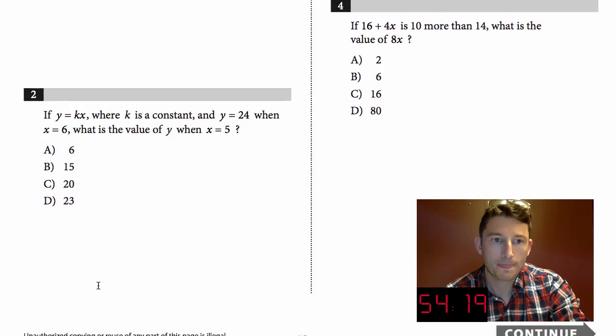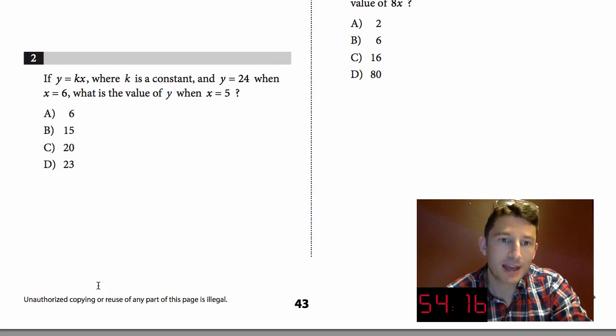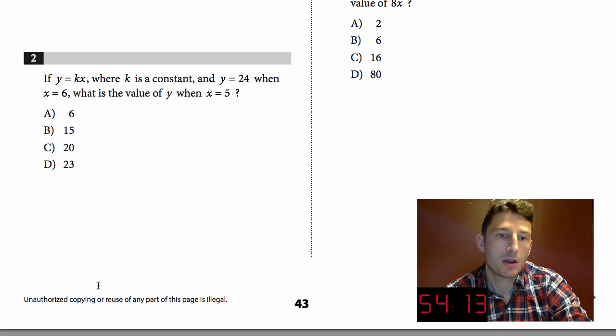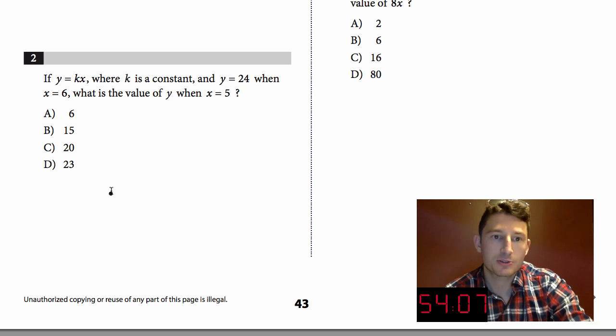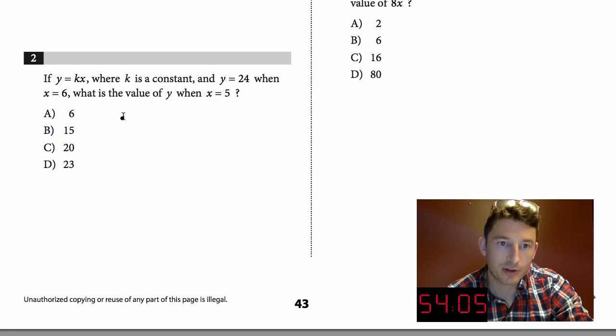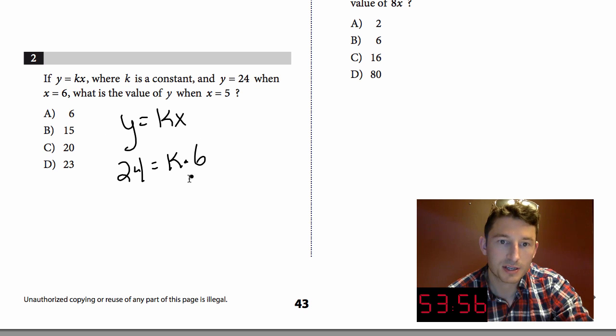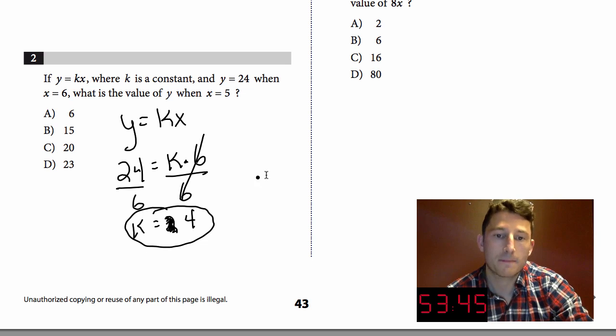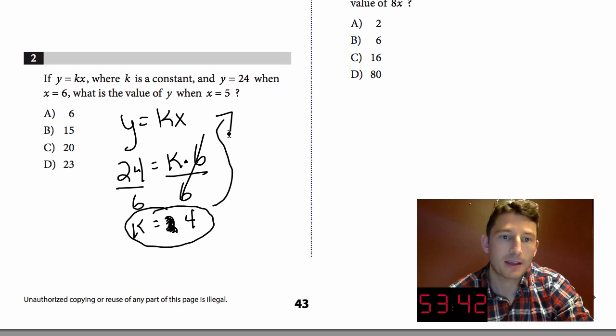Number two: If y equals kx where k is a constant and y equals 24 when x equals 6, what is the value of y when x equals 5? This looks like a straightforward plug-in problem. They tell me y is 24, so I'm plugging in. We don't know k but x is going to be 6. I'll divide out by 6, and I get k equals 4. So I can circle that and use that now to plug back in.